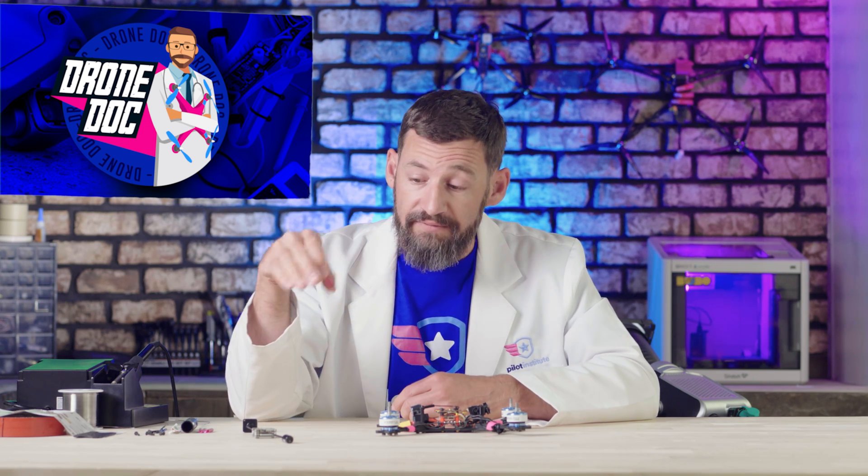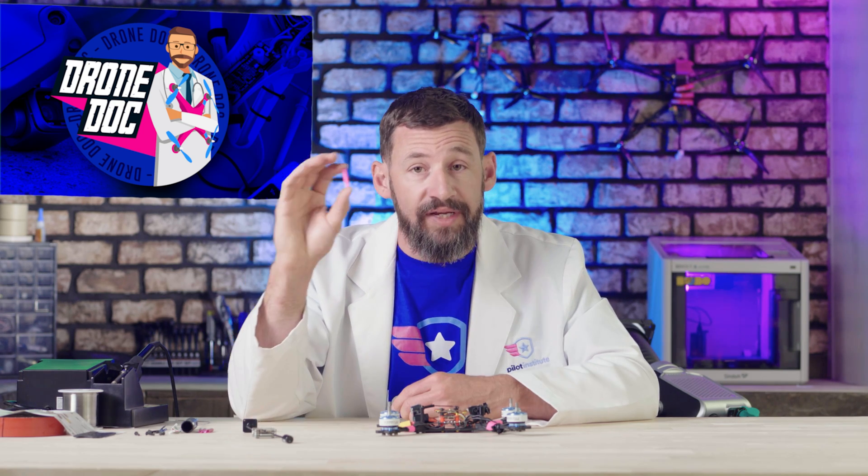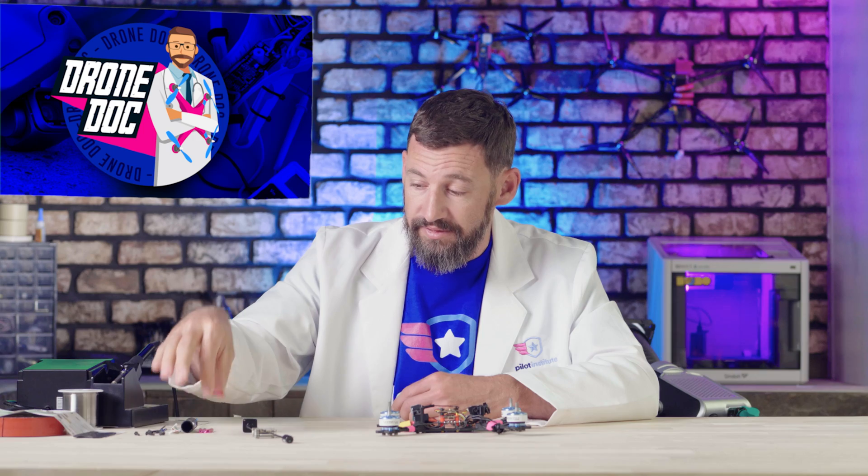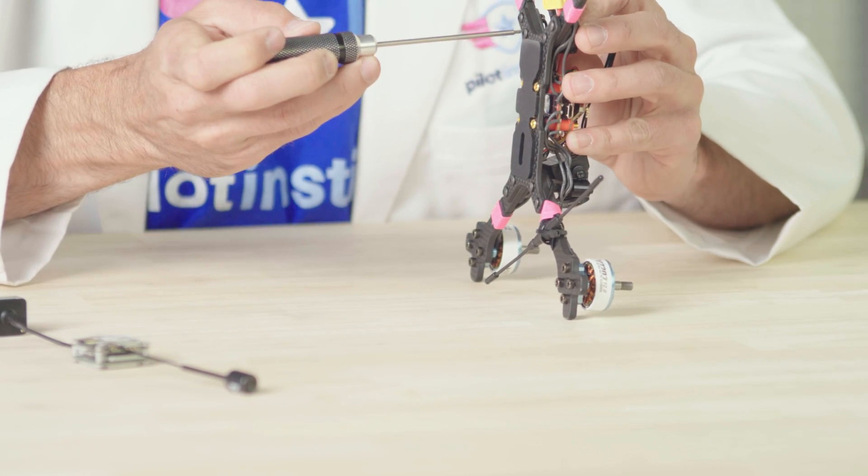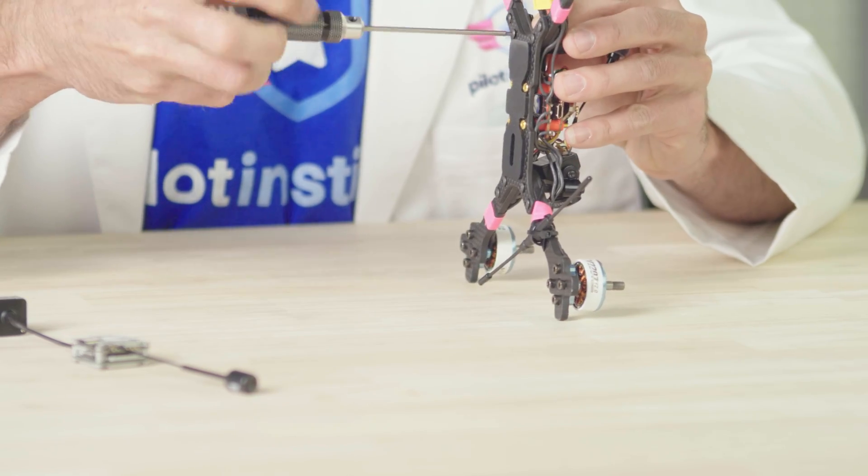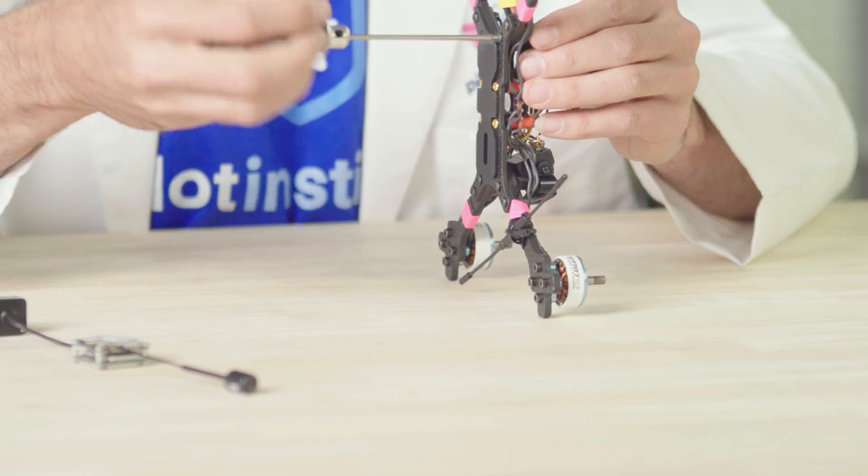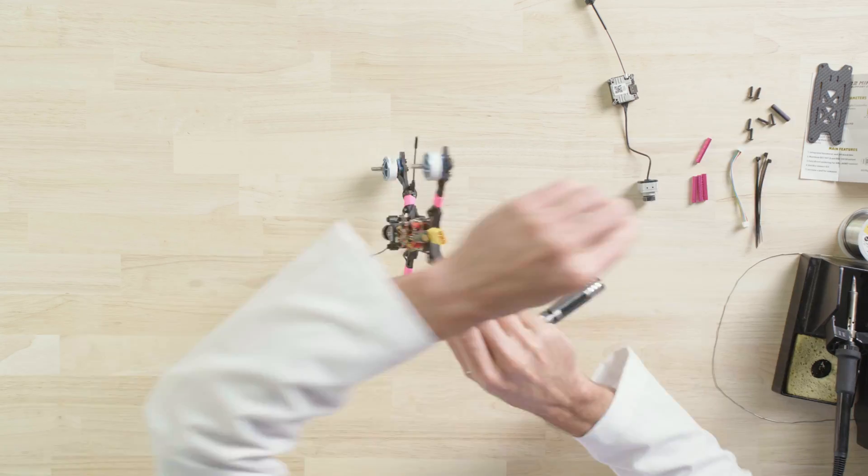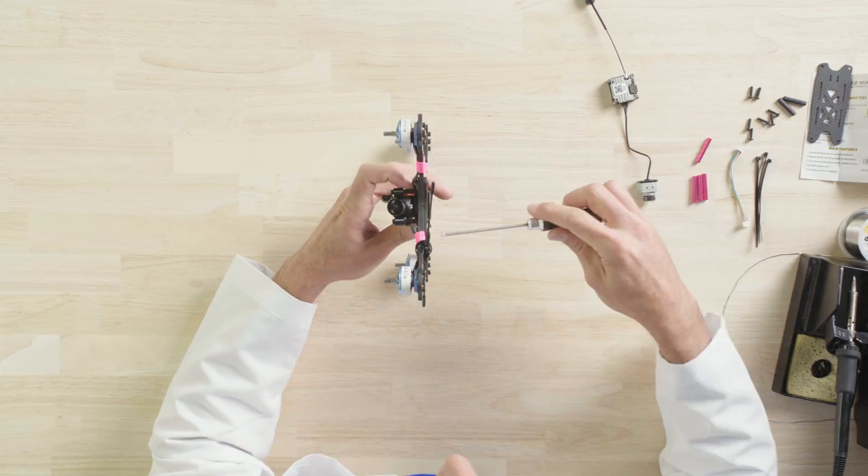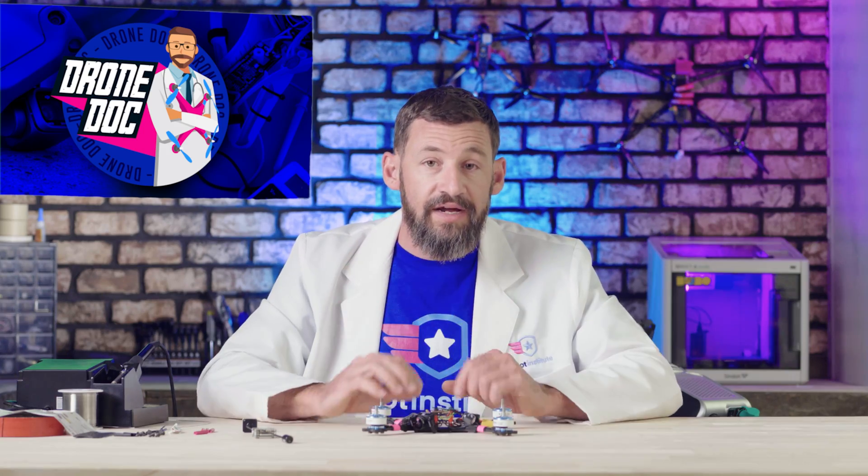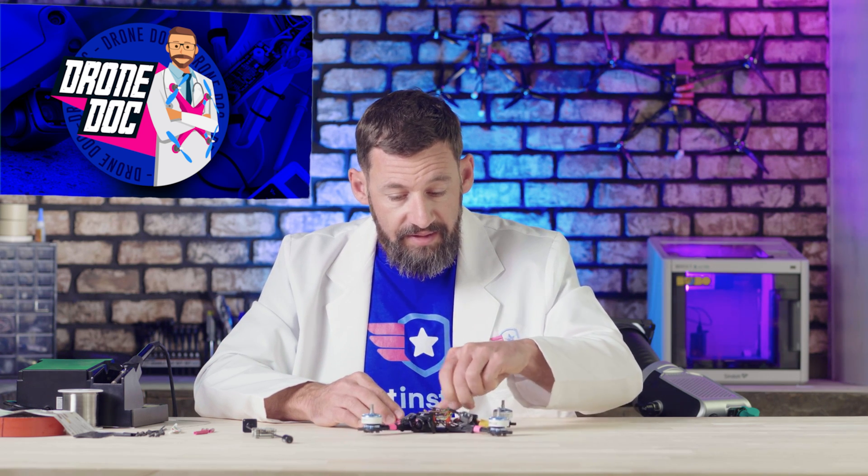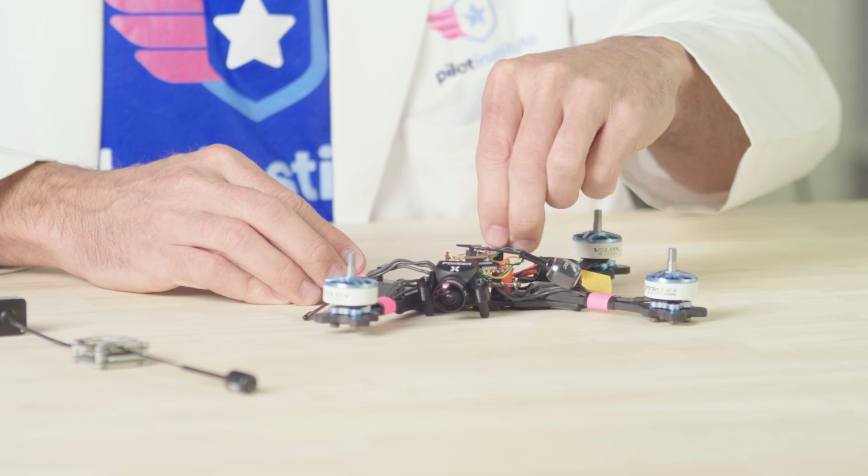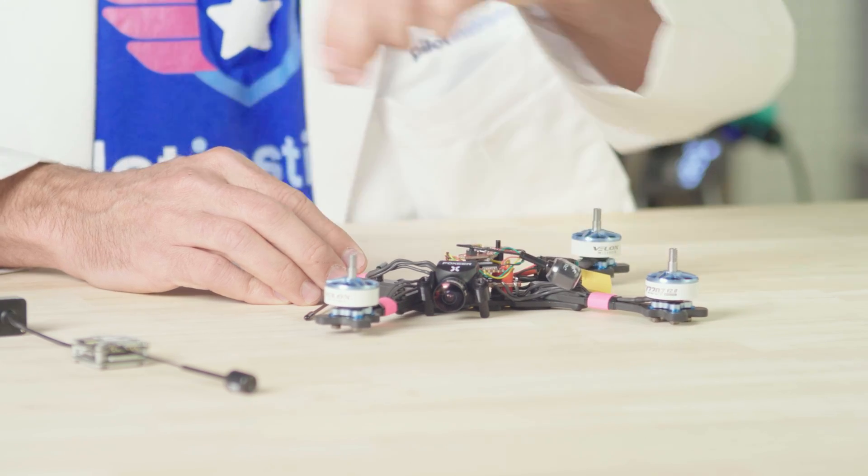And again, everything that we have here on the table that we purchased will be down in the video description. The Vista unit and these 35mm standoffs. So we'll remove the existing ones and then we'll remove the VTX. So once your standoffs are off, you're just going to remove these nuts and remove the video transmitter and get that desoldered off the flight controller.